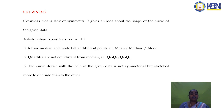Skewness means lack of symmetry. It gives an idea about the shape of the curve of the given data. A distribution is said to be skewed if mean, median, and mode fall at different points — that is, mean ≠ median ≠ mode — and the quartiles are not equidistant from the median, i.e., Q3 − Q2 ≠ Q2 − Q1.